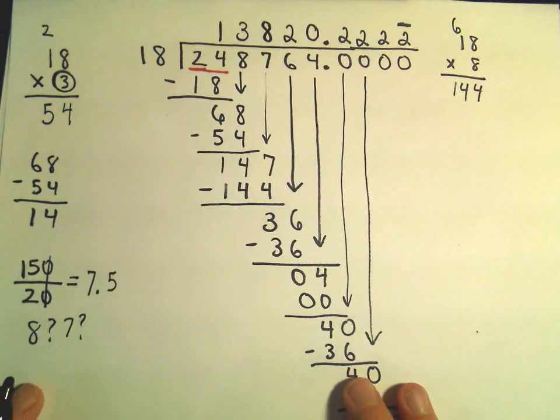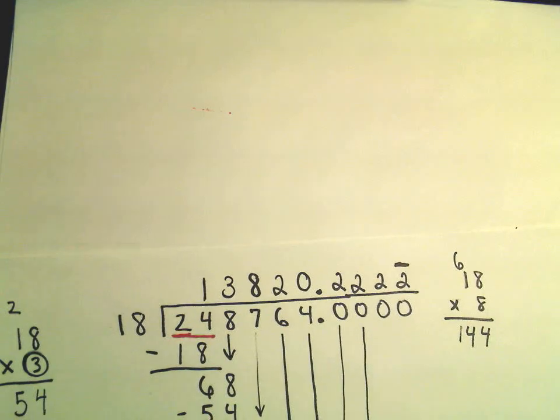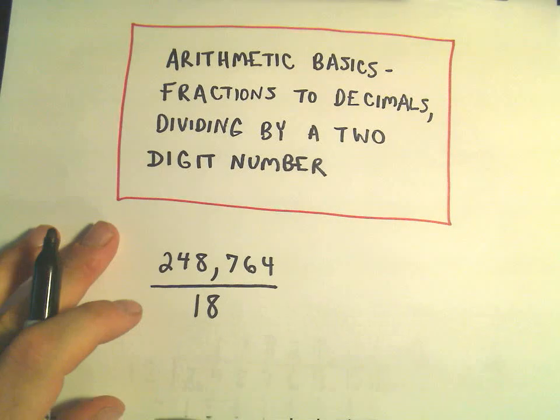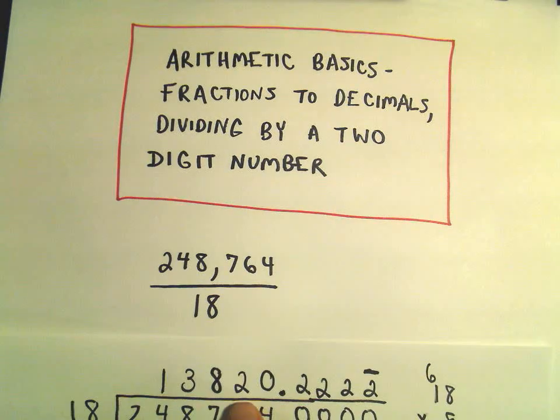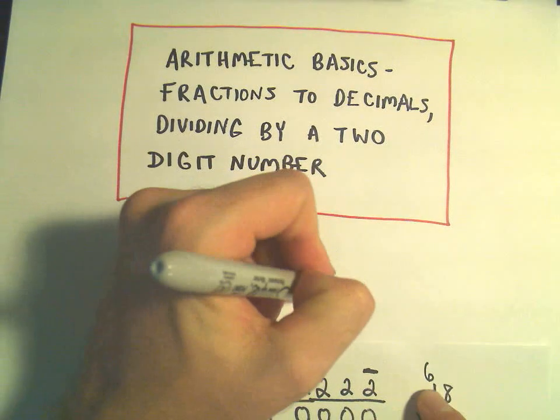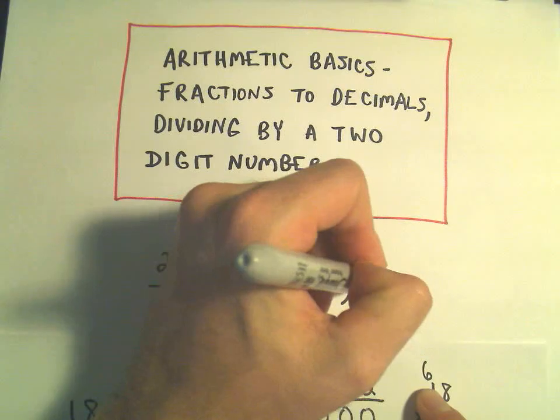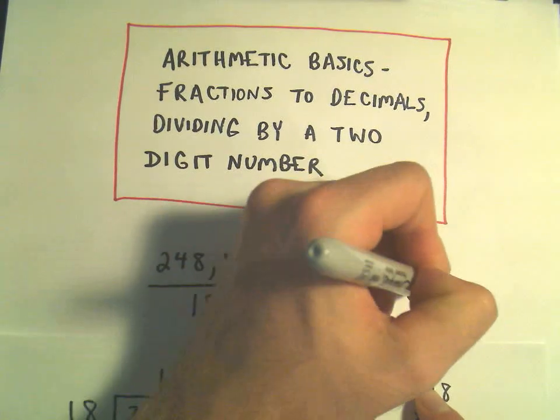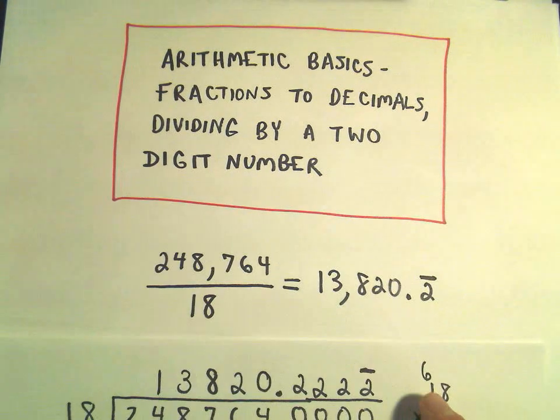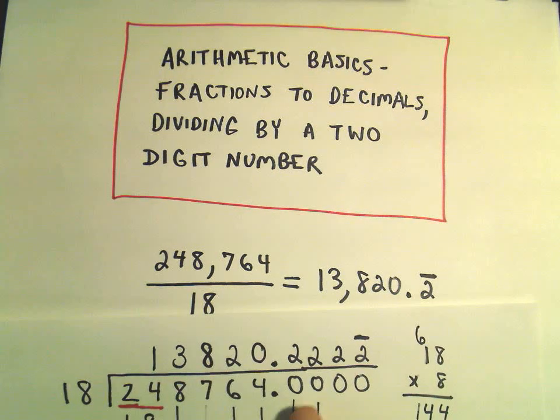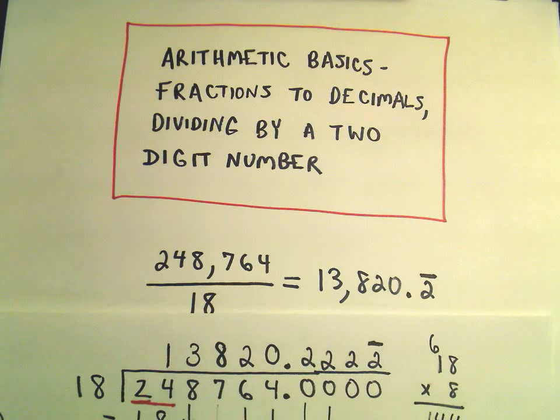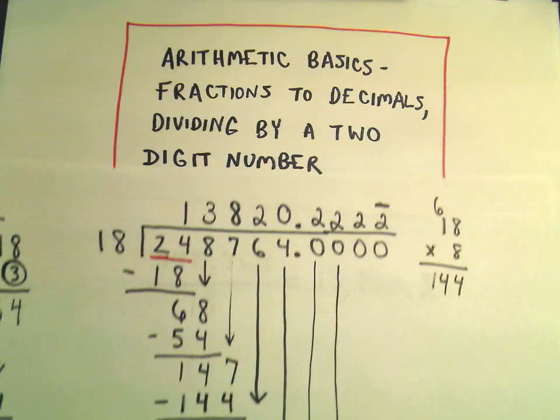Or in summary, what we can simply say here is that our original value that we were doing the division. So 248,764 over 18. It says we're going to get the number 13,820.2. And now I can just stick the bar over the first 2. And again, that just indicates that the 2 goes on forever and ever and ever and ever. So again, pretty tedious here.